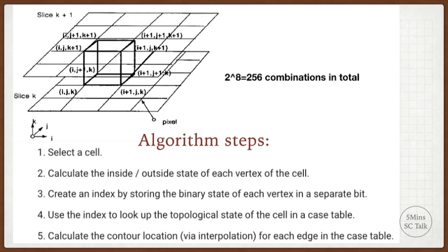We select a cell, then calculate the inside or outside state of each vertex of the cell. We create an index by storing the binary state of each vertex in a separate bit. We then use the index to look up the topological state of the cell in a case table. Finally, we calculate the contour location by interpolation for each edge in the case table. You may need to read the original paper to get more details, but I believe you can understand main ideas of the Marching Cube algorithm to this step.